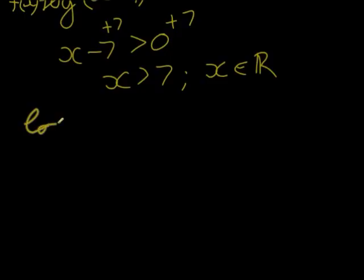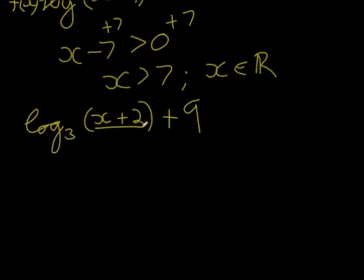Finally, let's look at one more example. Let's look at the logarithm, let's say base 3, the input is x plus 2, and we have a plus 9, not as an input but outside. In this case, once again, it's just the input that we're concerned about. The plus 9 is outside of the logarithm because it's outside of the bracket, so we know that the input is x plus 7. That must be bigger than zero.